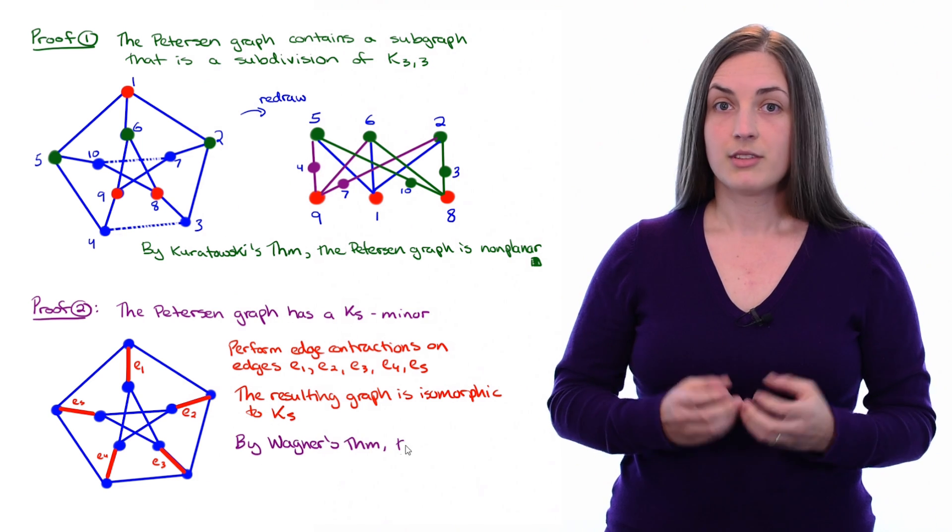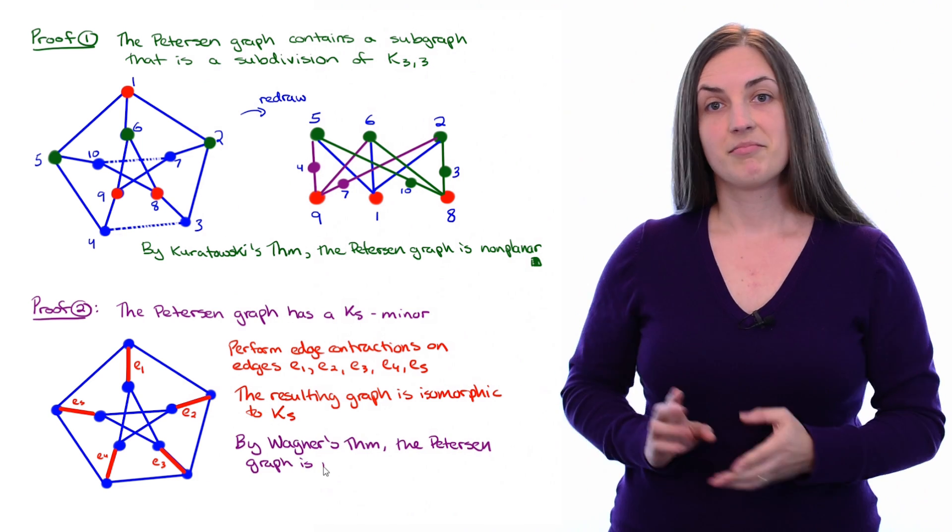Therefore, by Wagner's theorem, the Peterson graph is non-planar. And we're done the second proof.